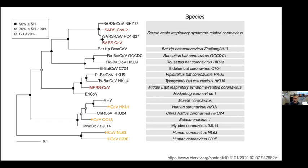Bats seem to be the biggest source of coronaviruses, and it's probably other animals that serve as intermediaries. With MERS, it's clearly camels. With the original SARS coronavirus, it was thought that there were other potential mammals involved, like civet cats or other animals unique to China. With SARS-CoV-2 we're not exactly sure, but we do know it can certainly infect other mammals, including house pets like cats or dogs.